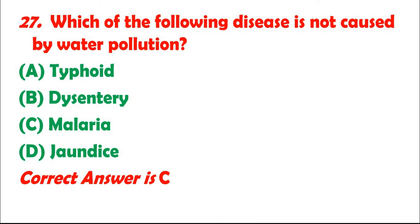Question 27: Which of the following diseases is not caused by water pollution? A. Typhoid. B. Dysentery. C. Malaria. D. Jaundice. Correct answer is C.